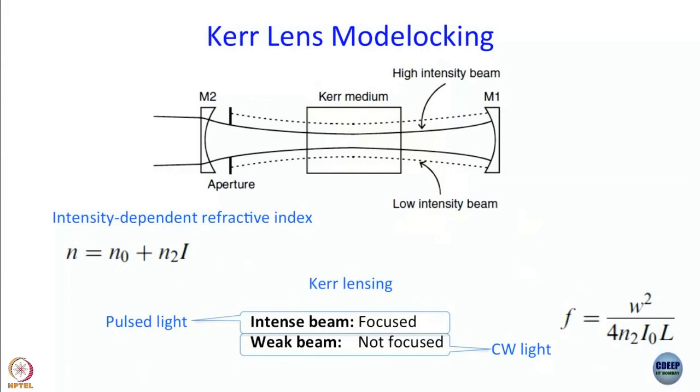This intensity-dependent refractive index acts like a lens called a Kerr lens. Since pulsed light is intrinsically more intense, Kerr lensing selects pulsed light over CW light. You can introduce an aperture in the beam path, but even that is not required — the optics usually take care of it. Femtosecond pulses are thus produced by Kerr lens mode locking without much intervention.